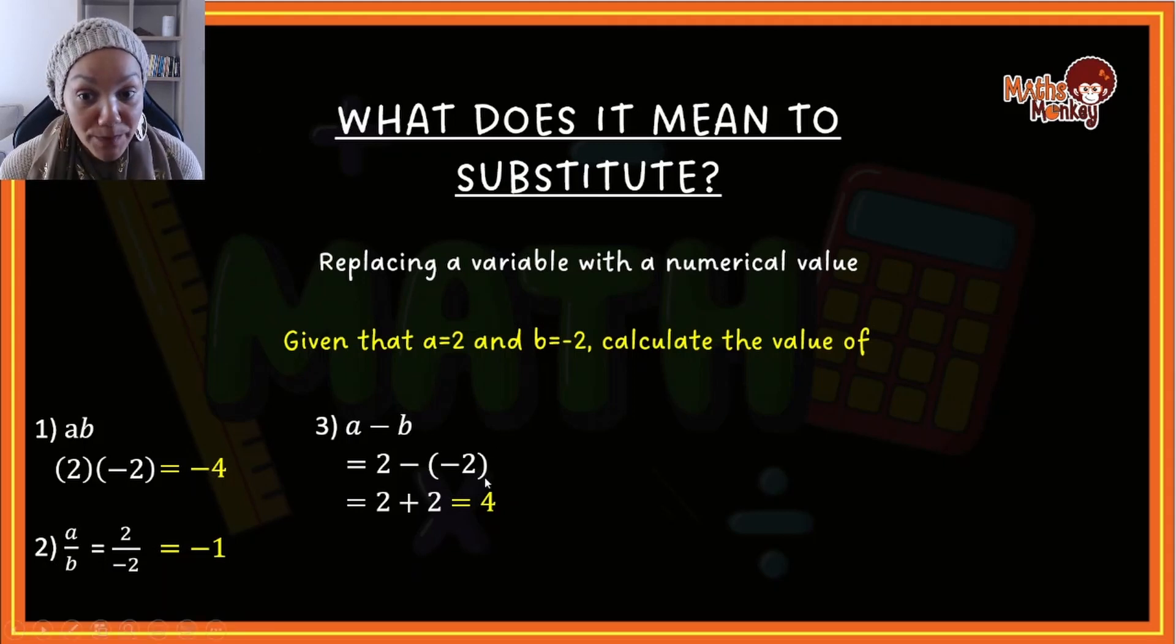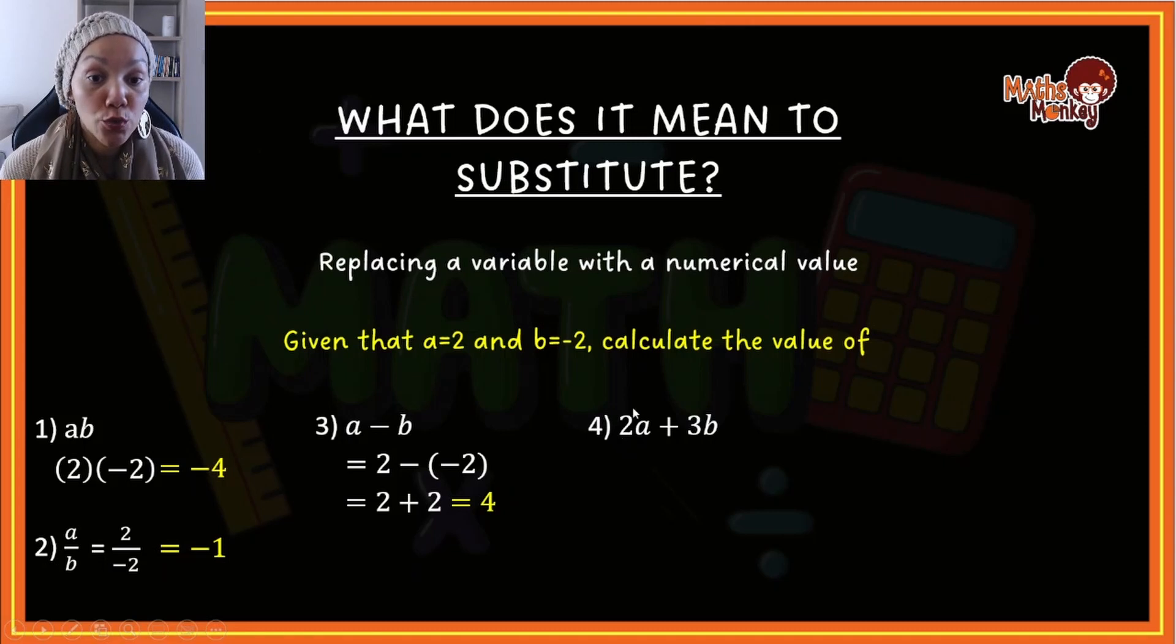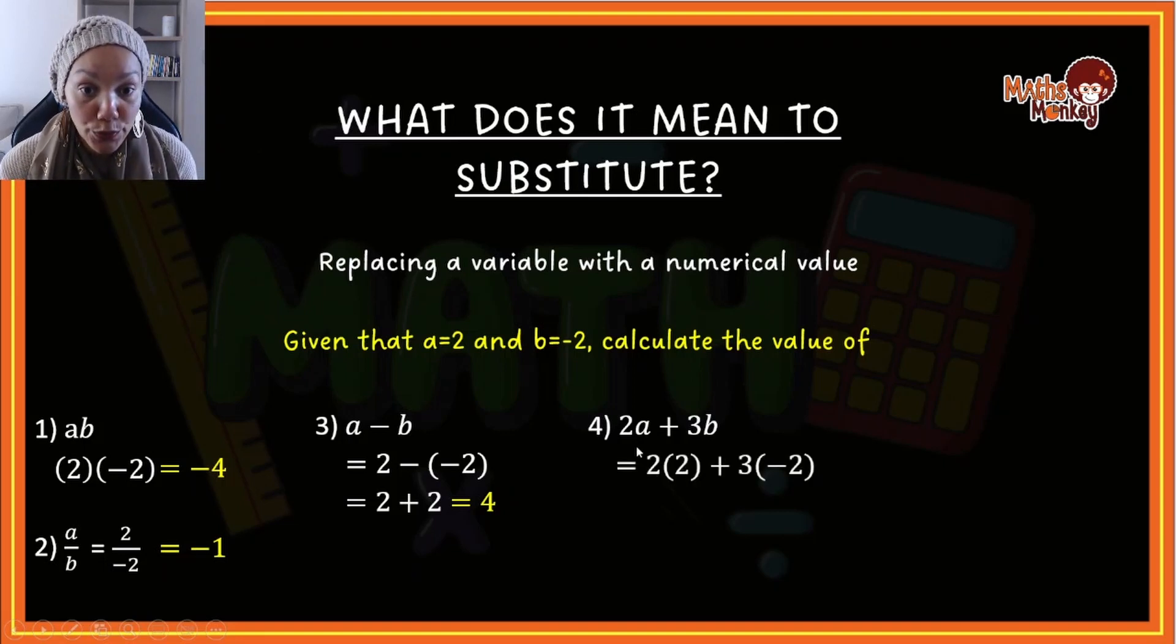Just pay attention there to what happened with the negative. Let's do another example: 2a plus 3b. If you've seen my previous videos you will know this means 2 multiplied by a plus 3 multiplied by b. So that's exactly how we're going to substitute. We're going to say 2 multiplied by a, and a is now 2, plus 3 multiplied by negative 2 because b is now negative 2.